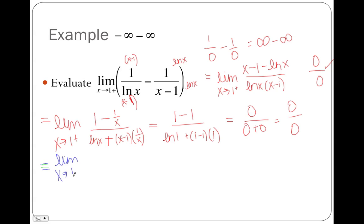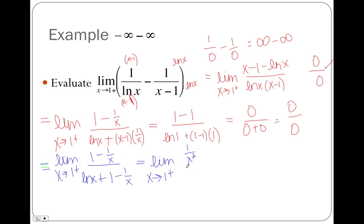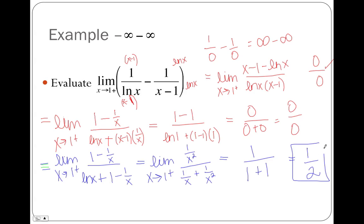Taking the limit as x approaches 1 from the right after simplification: the derivative of the numerator (1 − 1/x) is 1/x², and the derivative of the denominator (ln(x) + 1 − 1/x) is 1/x + 1/x². Substituting x = 1: numerator is 1/1 = 1, denominator is 1/1 + 1/1 = 2. So the final answer is 1/2.